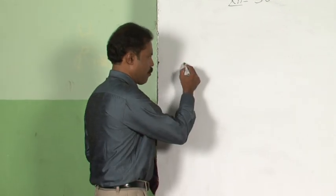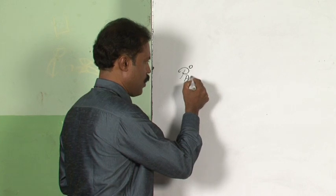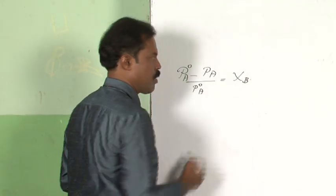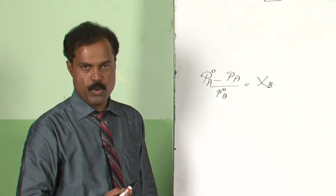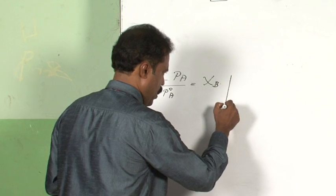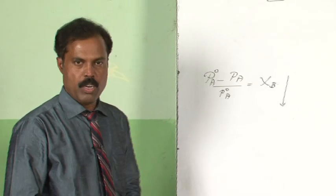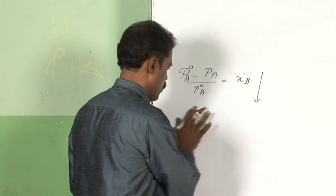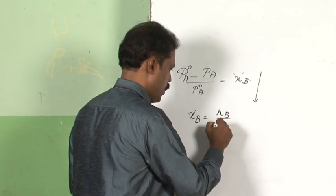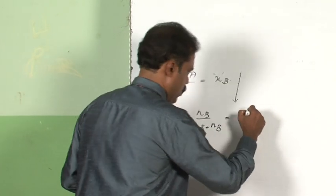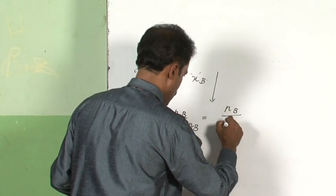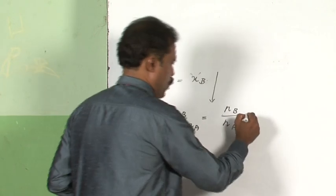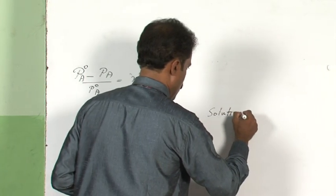In Raoult's law we had learned the relative lowering of vapor pressure, which is P0A minus PA divided by P0A, is equal to XB, where XB represents the mole fraction of the solute. XB equals NB divided by NA plus NB, which for a very dilute solution can be written as NB divided by NA.